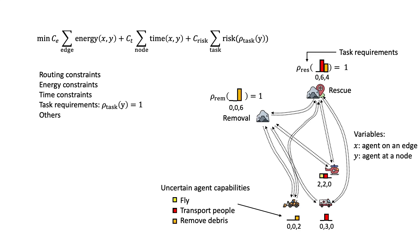There are two main decision variables: the number of agents that travel on an edge, and the number of agents assigned to a task node. The objective and constraints are all functions of these variables.